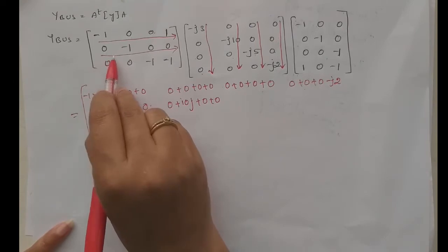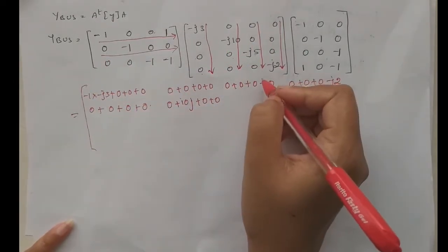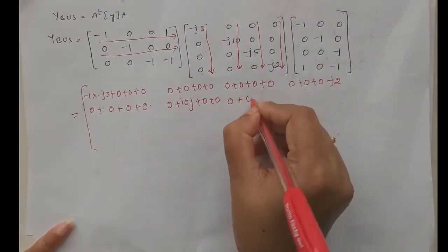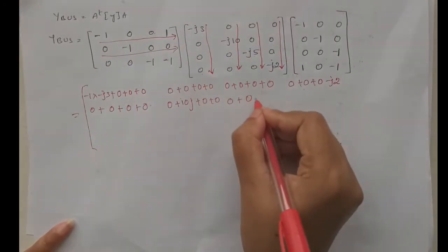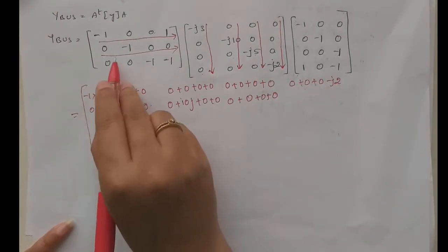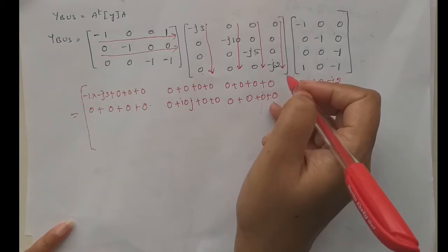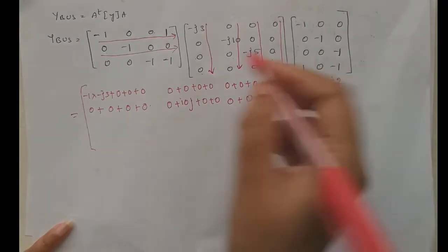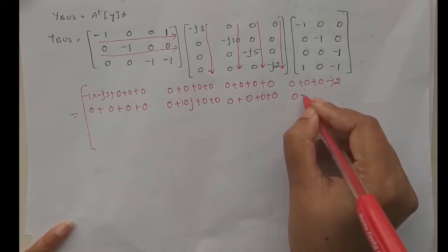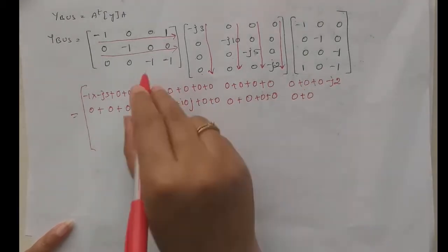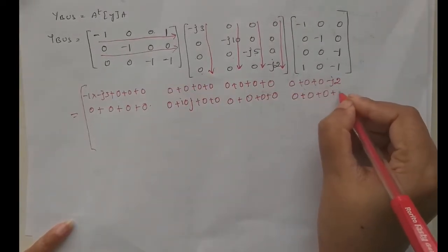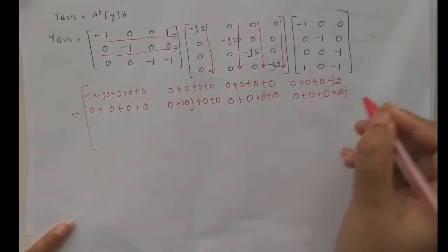Second row with third column: zero times zero is zero, minus one times zero is zero, zero times minus j5 is zero, zero times zero is zero — result is zero. Second row with fourth column: zero times zero is zero, zero times zero is zero, minus one times zero is zero, minus one times j2 gives plus j2. Now taking second row with second column: zero times zero is zero, minus one times zero is zero, giving minus j10. The second row last column gives zero since zero times minus j2 equals zero.